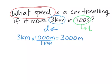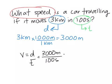So now we can plug this into our formula. Speed equals distance over time. It's going to equal 3,000 meters over 100 seconds, and 3,000 divided by 100 equals 30 meters per second.